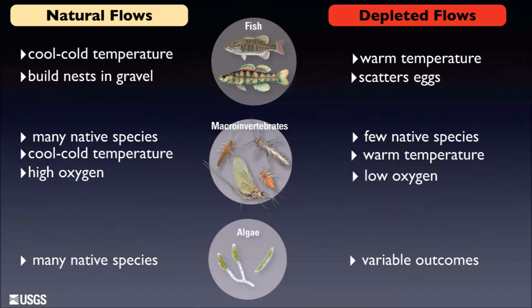This example illustrates two important points. First, biological communities respond differently to the human-caused stressor of flow modification. Second, streams with modified flows are especially vulnerable to additional human stressors that might change water or air temperature, which we might expect under various scenarios of climate change.